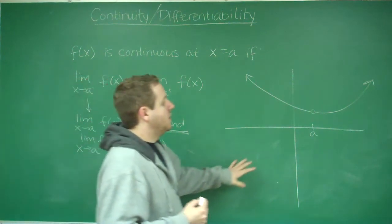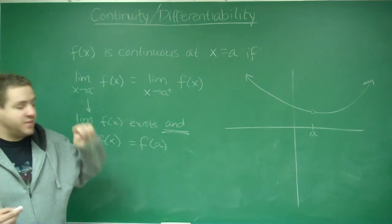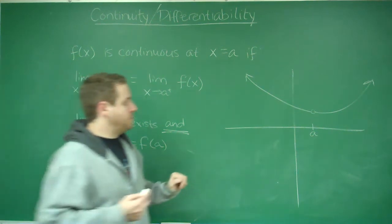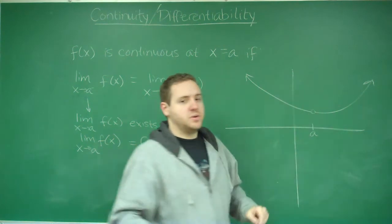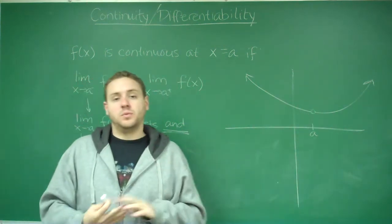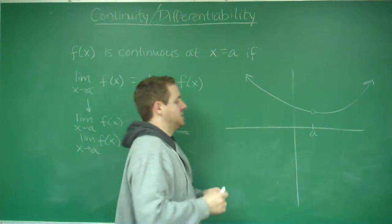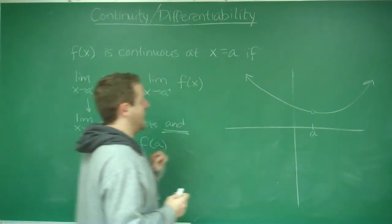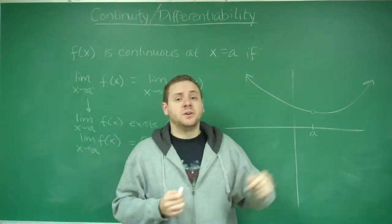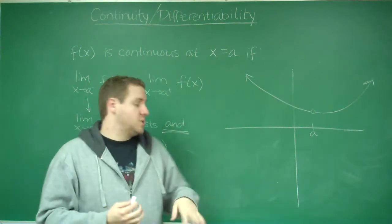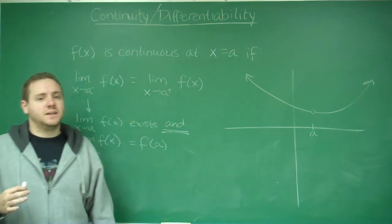What I've graphed over here is a function in which the first condition is satisfied but the second one is not. If you take the limit from the left or the right here, since it's going to that open circle — a removable discontinuity — the limit from the left and the right are definitely the same. But that limit does not equal f(a) because f(a) here does not exist. So this condition is not satisfied for this type of function, and that's why it's not continuous.